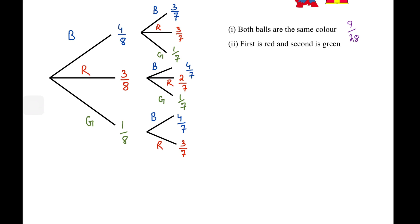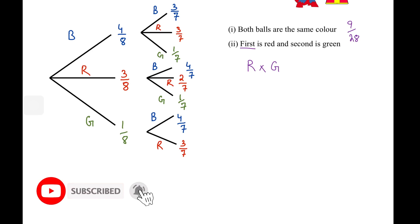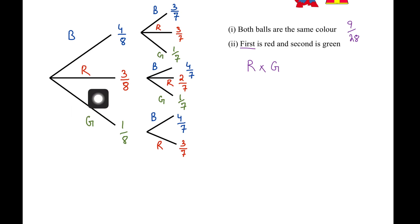Here we have part 2 of the same question. In this, we have to figure out the probability that the first ball is red and the second is green. Now, the order is specified, so I'm only going to consider the probability of the first being red. Whenever you think of the term 'and,' remember to multiply the probabilities. So I need: probability of drawing red in the first attempt times the probability of drawing green in the second.